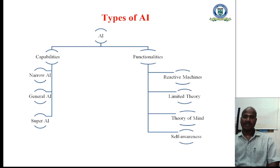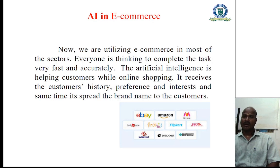Then we go to see functionality-based artificial intelligence: reactive machines, limited memory, theory of mind, and self-awareness artificial intelligence. These are the functionality-based types of artificial intelligence. Then we go to see artificial intelligence in e-commerce. In the modern period, we are purchasing everything through e-commerce and utilizing it in most sectors.